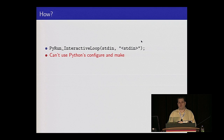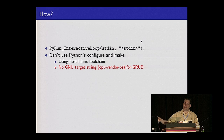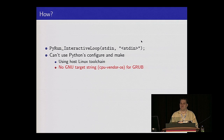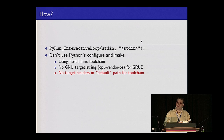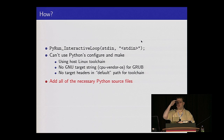We couldn't actually use Python's configure and make. Auto-conf is nicely portable, but the reason we couldn't go that route was that we're actually building using a host Linux toolchain — using GCC, building and targeting the same thing that Grub does. In particular, we don't have the classic CPU/vendor/OS triple that you'd see for a target operating system, like i386-pc-linux-gnu. We can't target Grub as though it were a cross-compilation toolchain. So instead, we added all the Python source files that make up the Python distribution into the Grub build system, listing all the C files and dependencies.